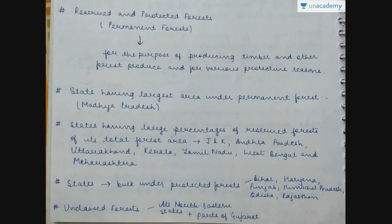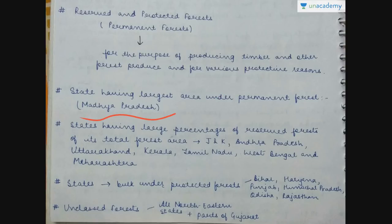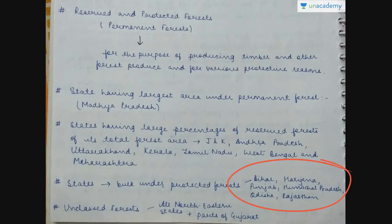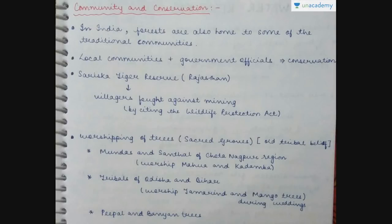Regarding types of forests: reserved and protected forests are also known as permanent forests, maintained for producing timber and other forest produce and for protective reasons. The state with the largest area under permanent forest is Madhya Pradesh. States with a large percentage of reserved forests include Jammu and Kashmir, Andhra Pradesh, Uttarakhand, Kerala, Mizoram, West Bengal, and Maharashtra. States where the bulk is under protected forests and then unclassed forests are mainly the northeastern states and some parts of Gujarat.